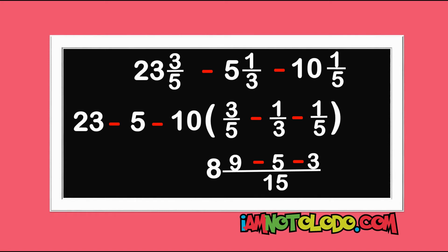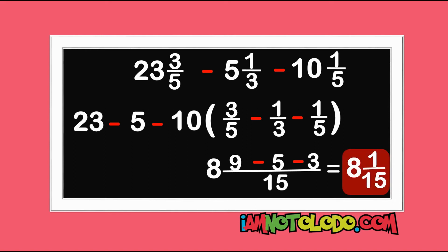This becomes: write down your 8, then 9 minus 5 is 4, then minus 3 is 1 over 15. This is our final answer. Did you get it right?